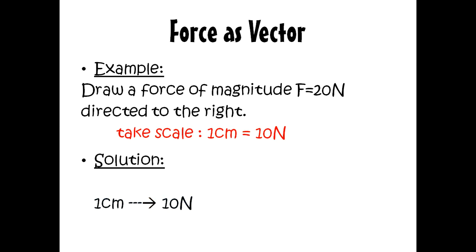So mathematically, it's written: each one centimeter represents 10 newtons. So what does 20 newtons have as length? We multiply using cross multiplication: 20 times 1 centimeter divided by 10 newtons. So it is, of course, 2 centimeters.